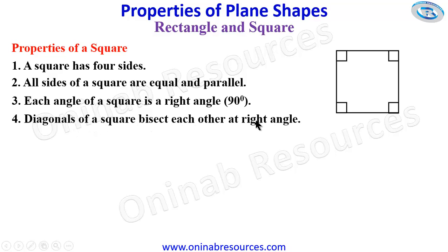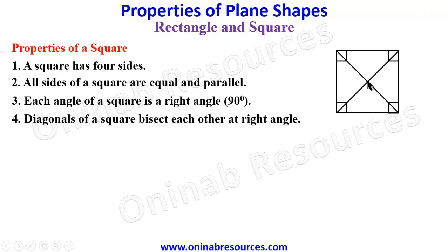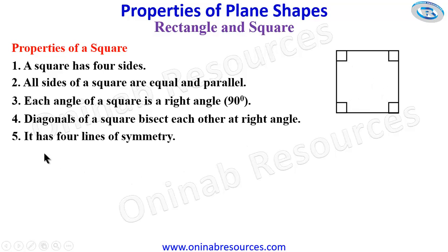We then have the diagonals of a square bisect each other at right angle. This time around it is not just bisecting each other, but the angle between them is 90 degrees. You can see the angles are 90, 90, 90.